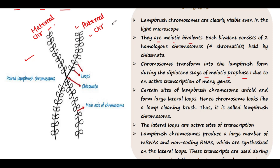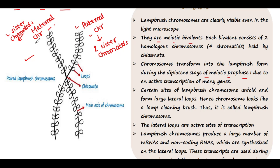Each paternal chromosome and maternal chromosome contains two sister chromatids. Since this chromosome is found in the diplotene stage of meiotic prophase 1, chiasmata are formed. You can see the X-shaped chiasmata structure which helps in crossing over. We know that crossing over occurs between two homologous chromosomes — one paternal and one maternal.